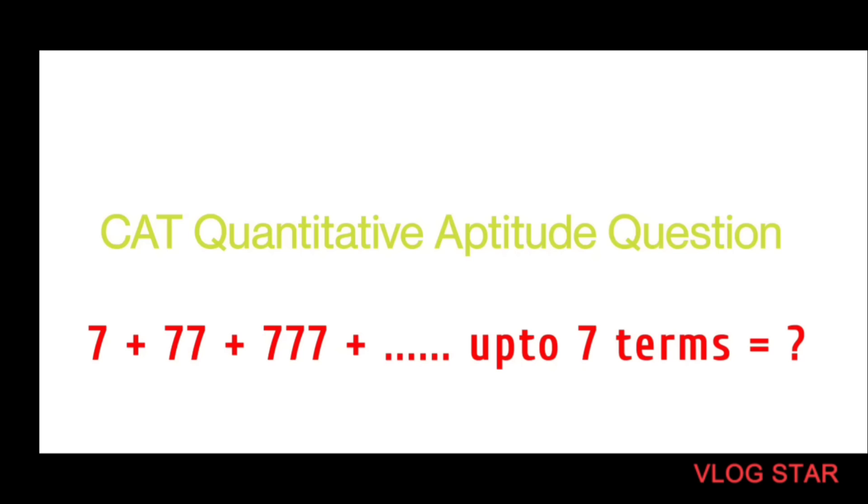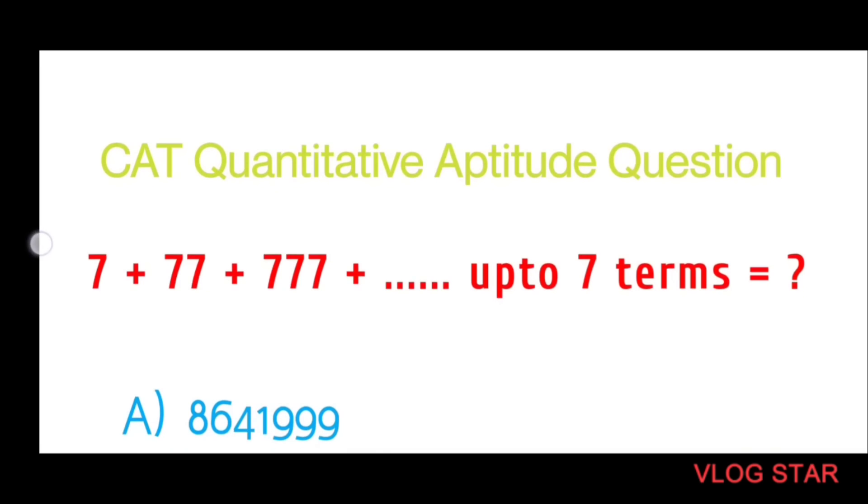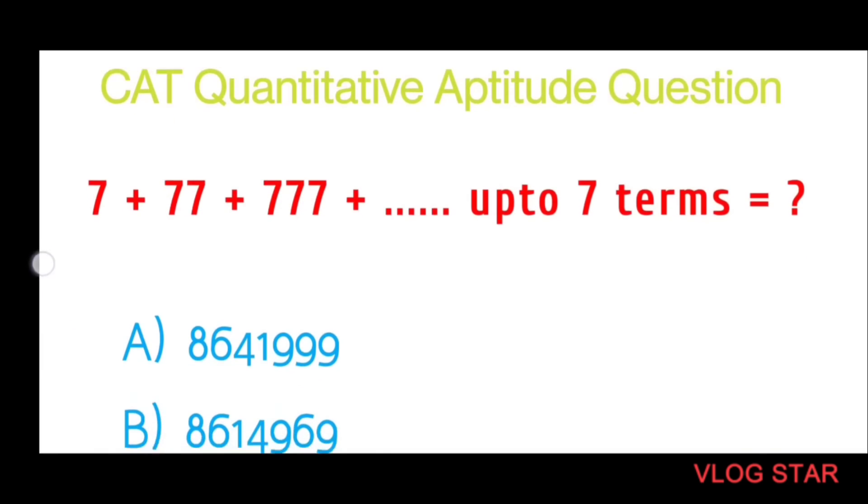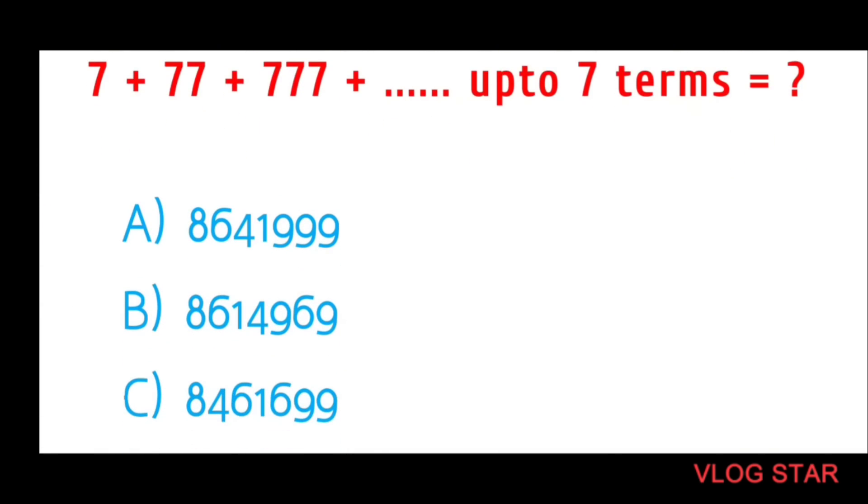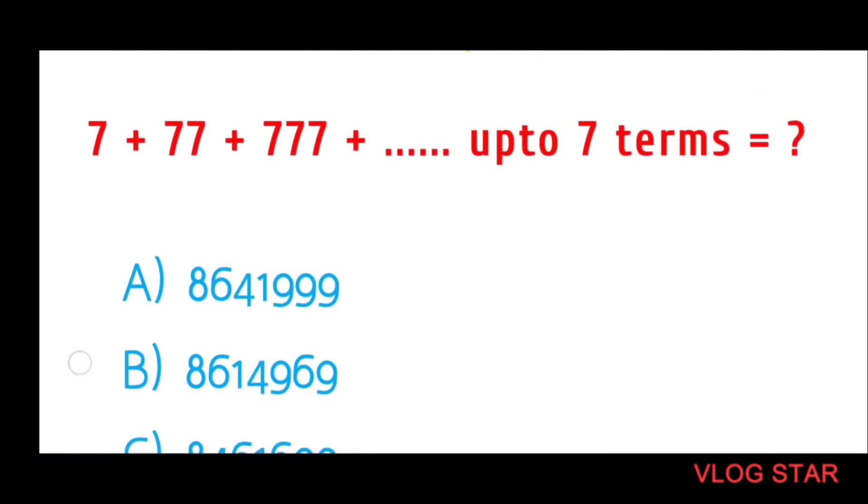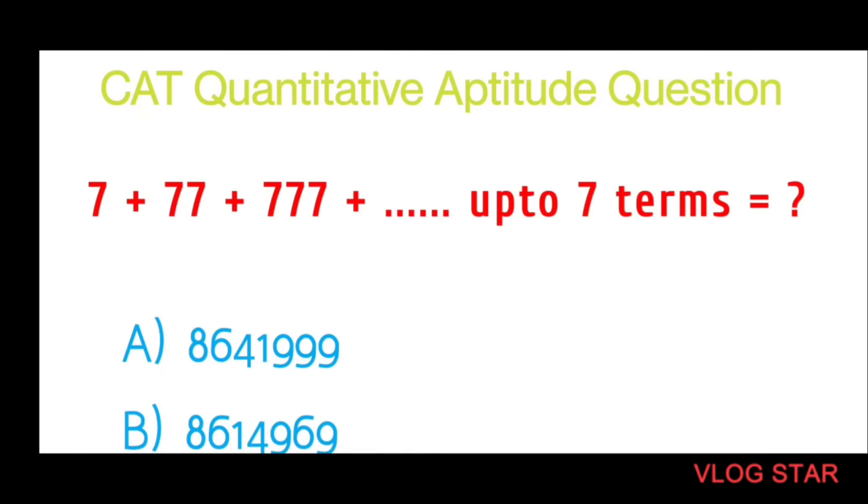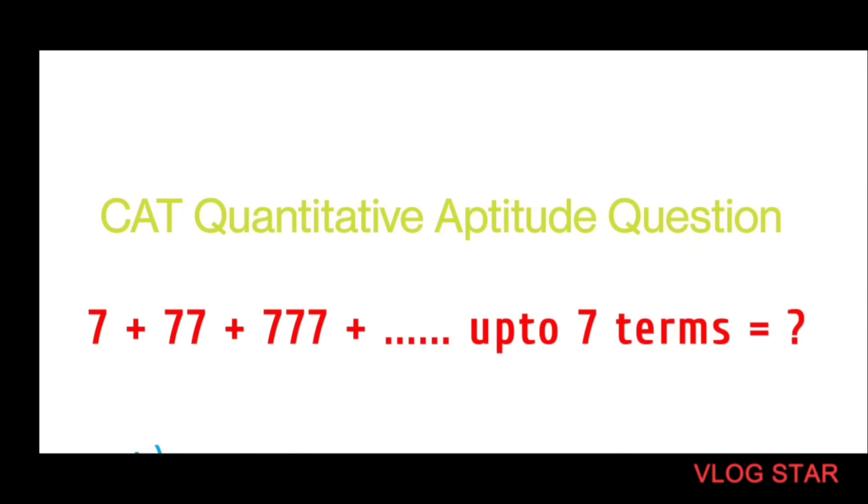The question is 7 plus 77 plus 777 and so on. If there are seven terms, the seventh term will have seven sevens. We need to find out the sum of these numbers. The options are given as you can see - these are the four options.